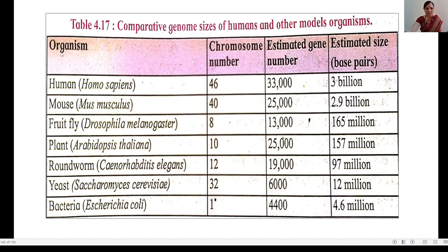Here is a tabular format showing comparative genome size of humans and other model organisms. The table has four columns: name of organism, chromosome number, estimated gene number, and estimated size in base pairs. The first organism is human, Homo sapiens, with 46 chromosomes, an estimated gene number of 33,000, and approximately 3 billion base pairs.